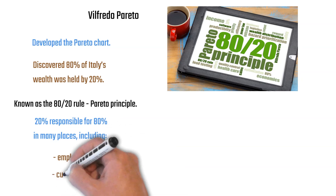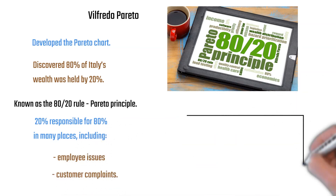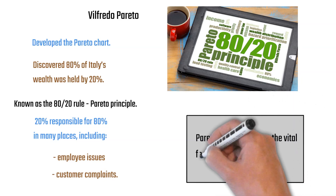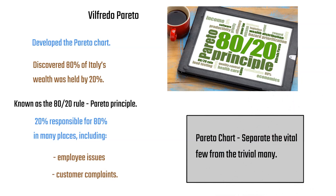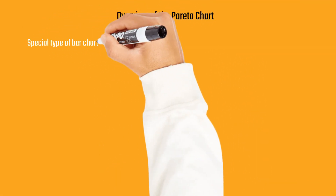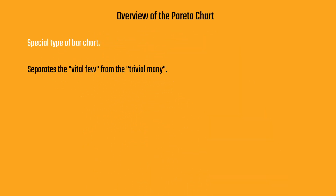For example, 20% of employees are responsible for 80% of employee problems, and 20% of customers are responsible for 80% of customer complaints. A Pareto chart helps us separate the vital few from the trivial many — it's a special type of bar chart that does exactly that.